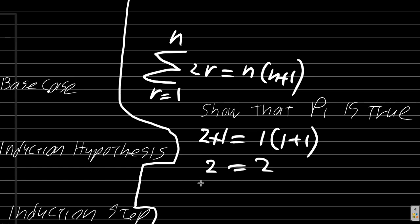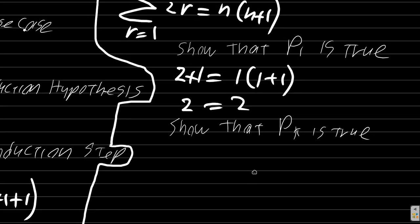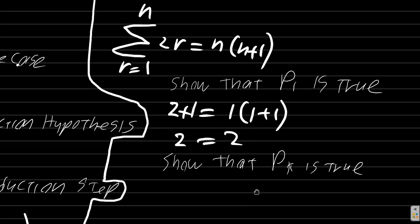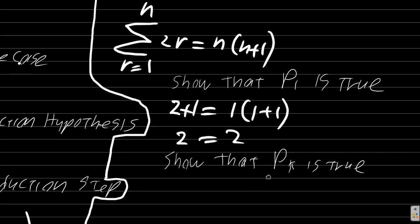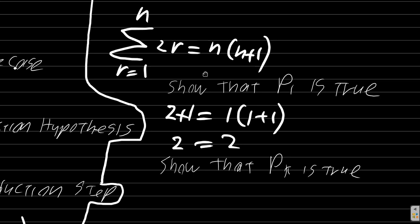Next, the induction hypothesis: show that pk is true. You cannot specify a certain number here, so it's k. If you specify a number, then the question arises — what about the number before it and the number after it? So you don't specify. You say k. pk is true. So you're going to change n to k.